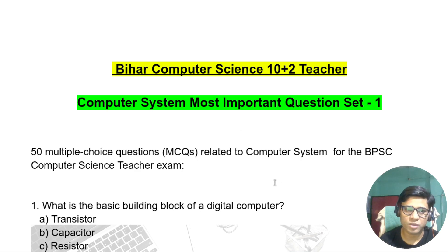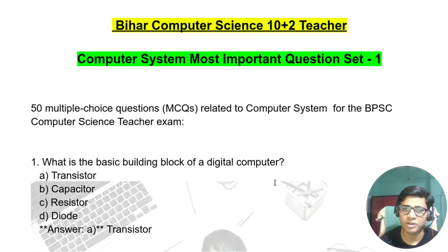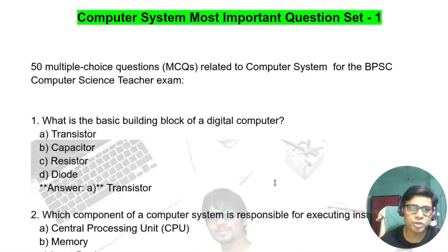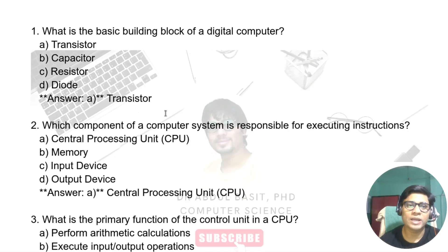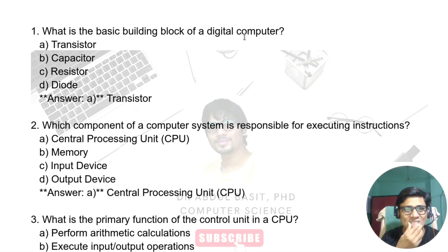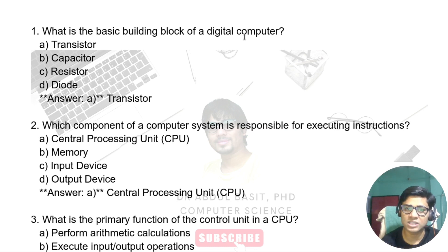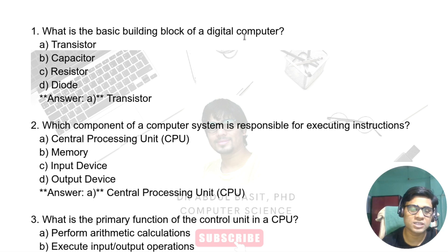Let's start with today's questions. What are the 50 MCQ in the computer system? The first question is: what is the basic building block of a digital computer? The options are transistor, capacitor, resistor, and diode. The answer is transistor. The basic building block of a digital computer is the transistor.